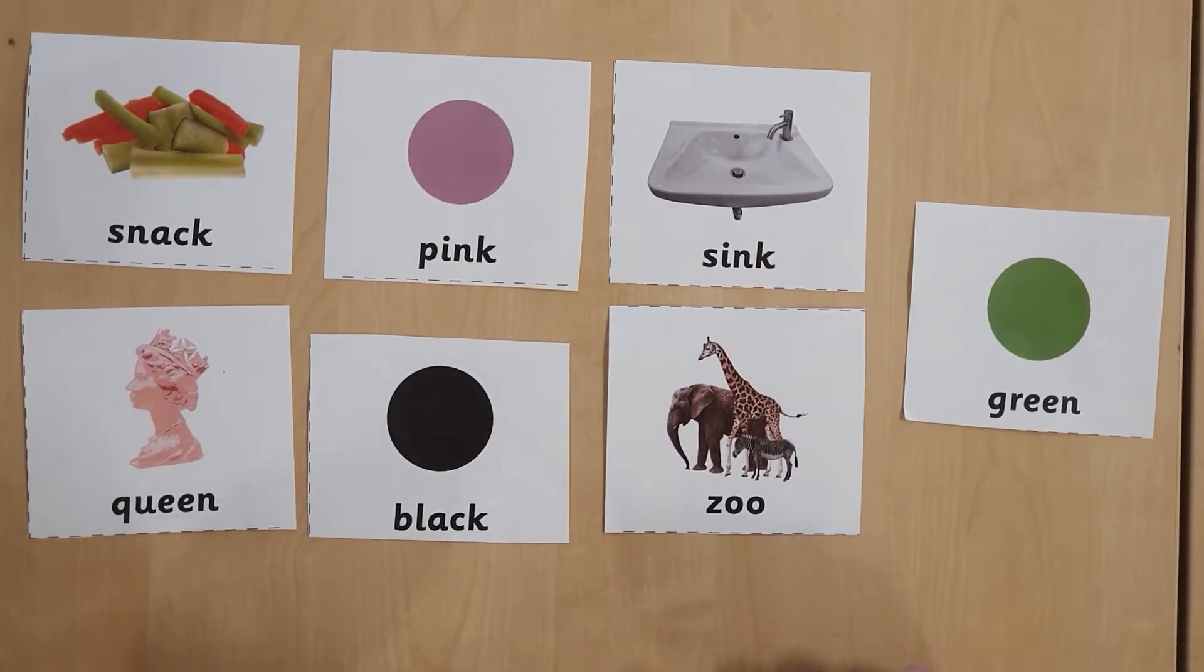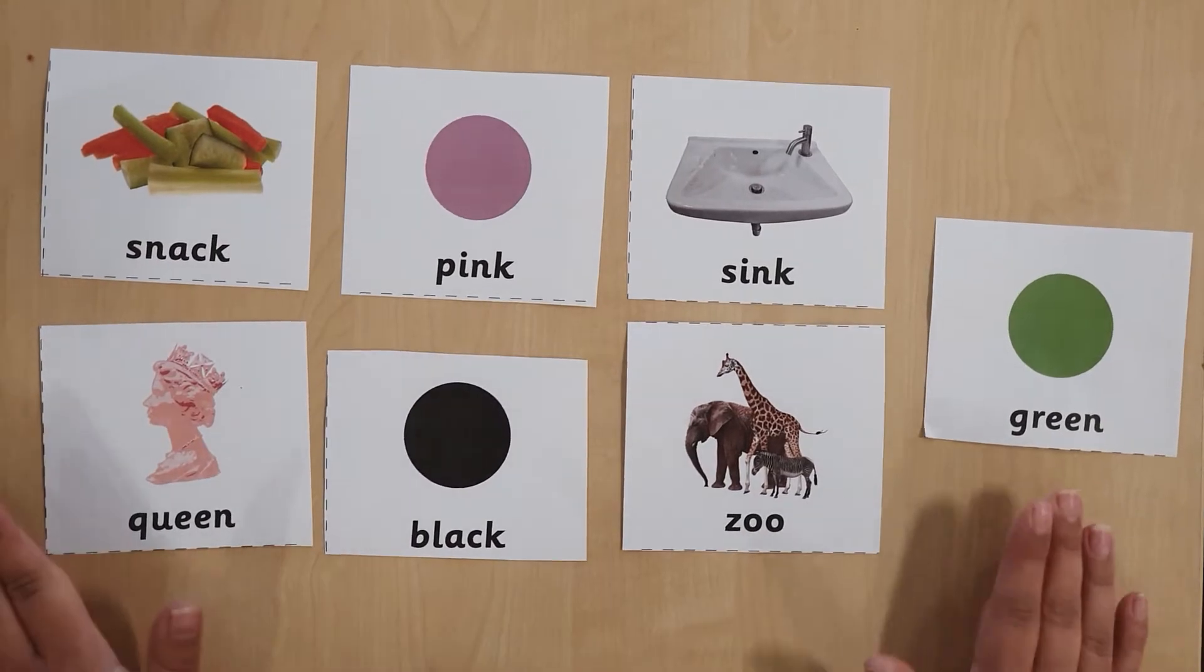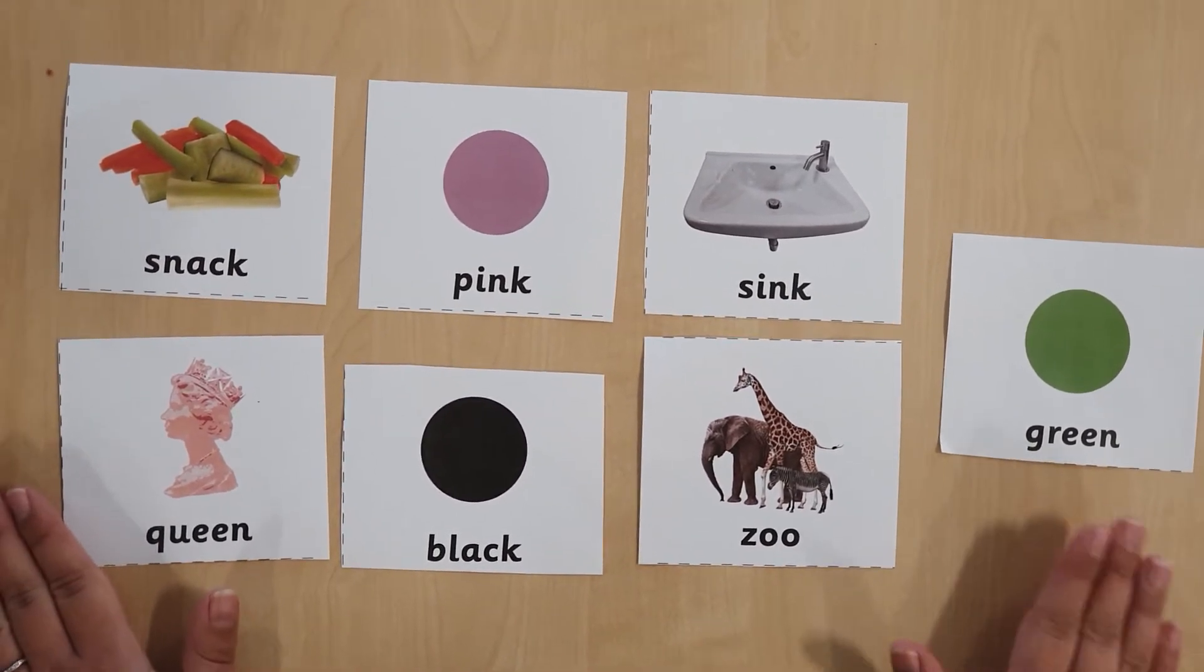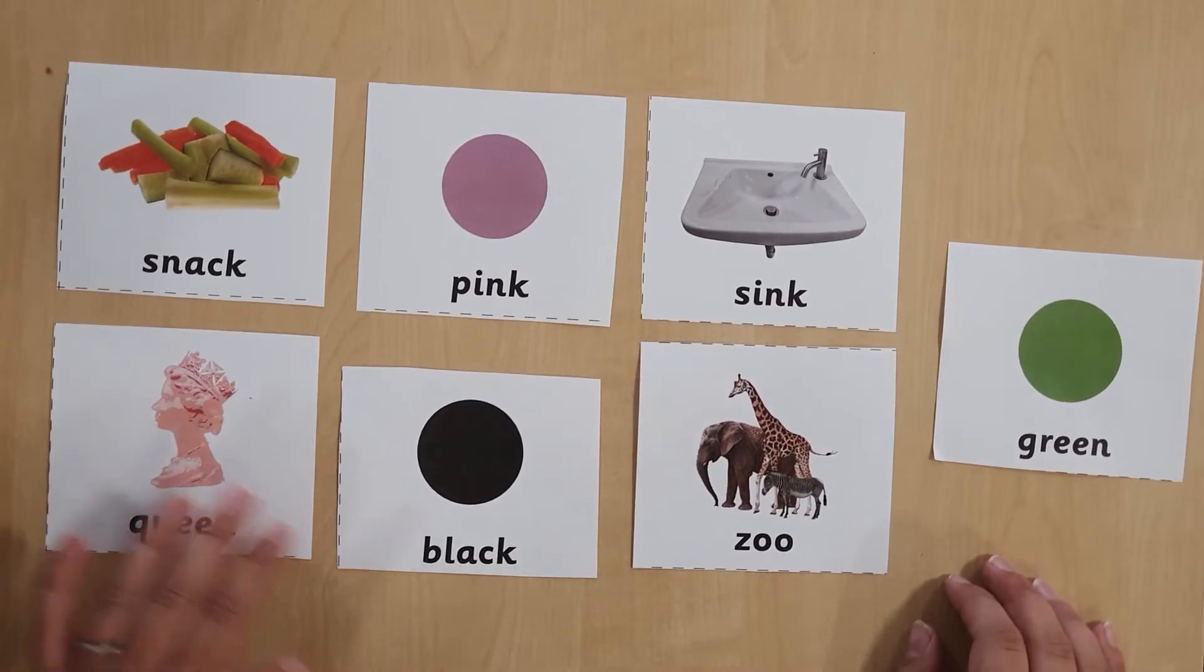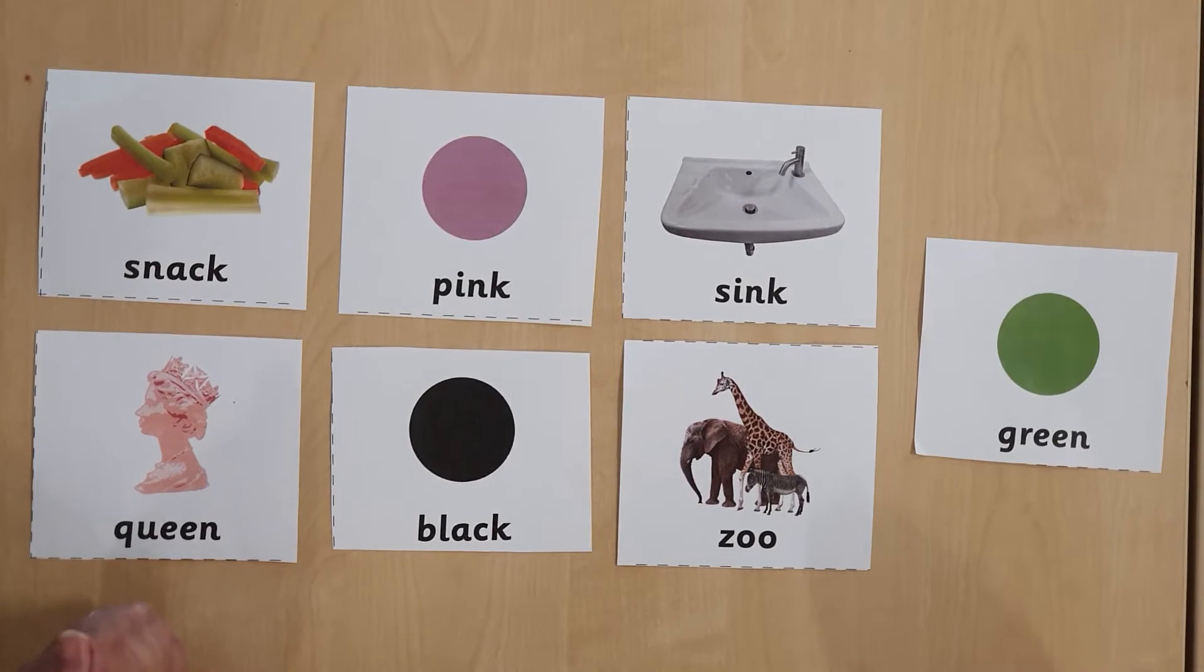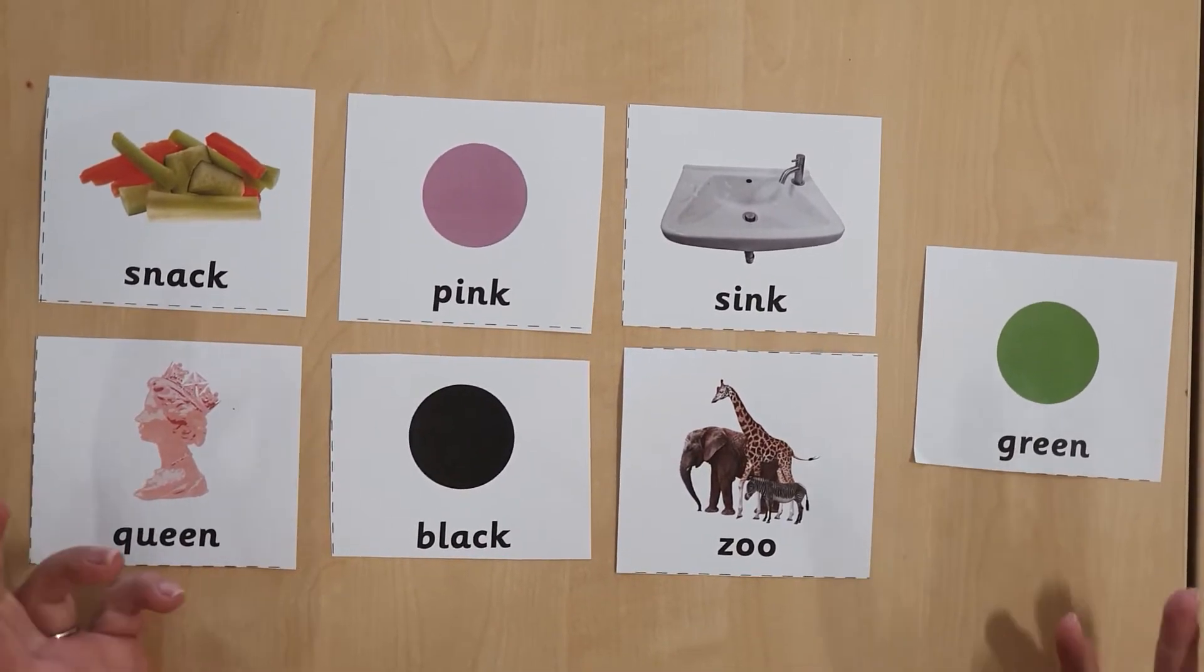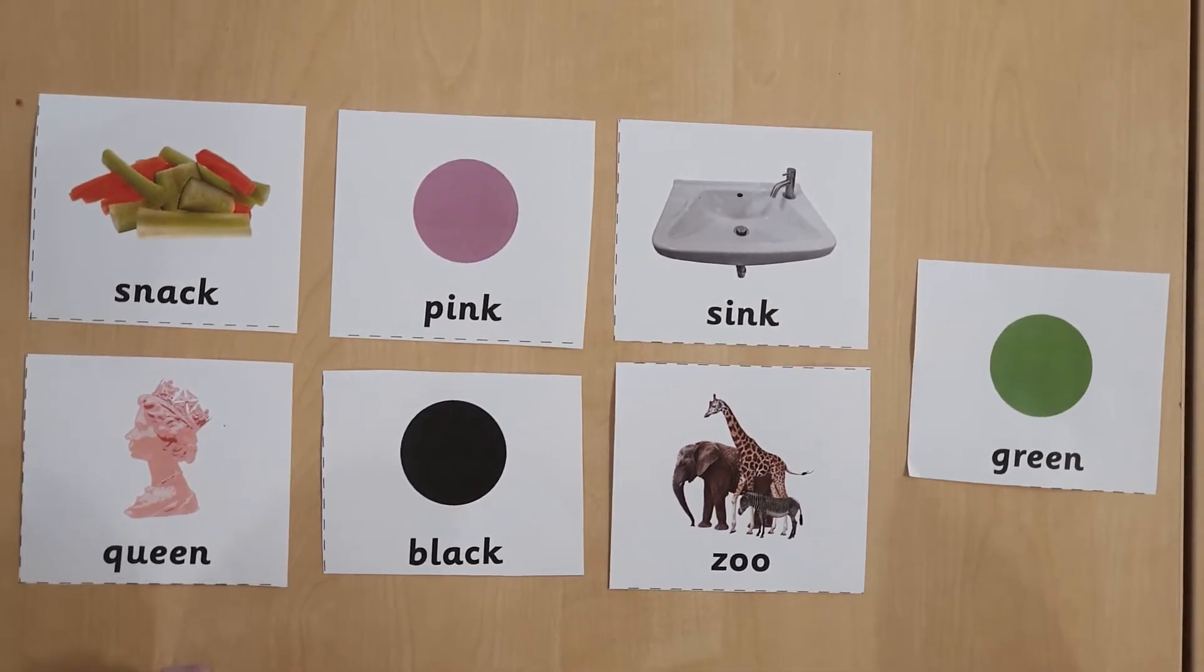Hi everybody, today we're going to be playing a rhyming game. You need to help me find the pairs that go together that rhyme. So what is a rhyming word again? Rhyming words are words that sound similar or sound the same. Let's have a go.